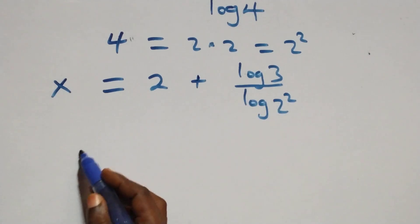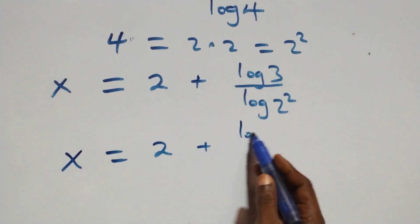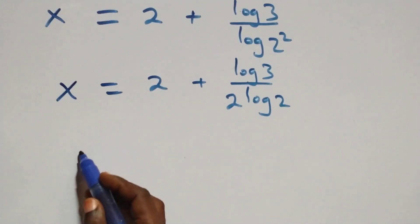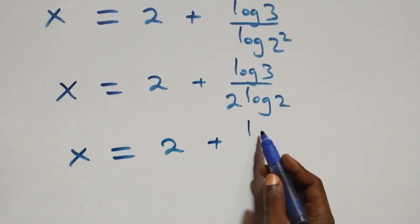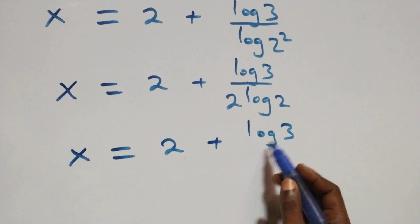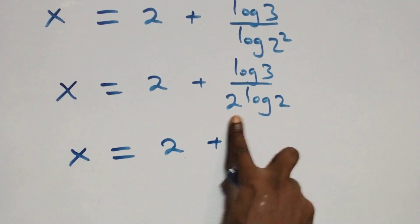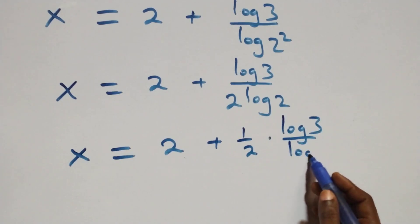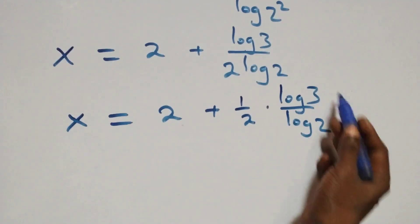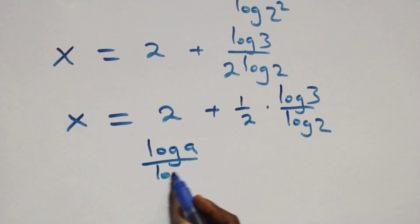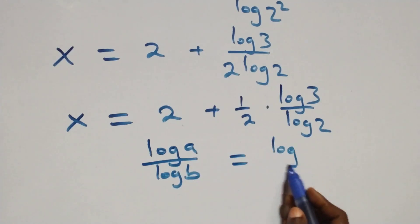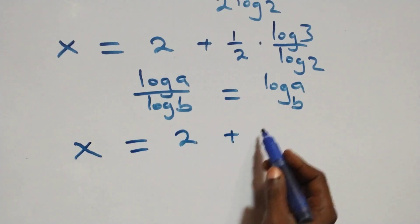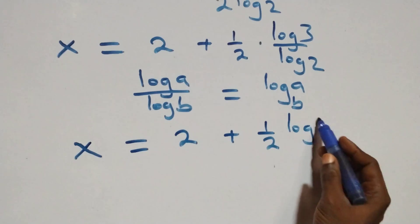We apply the power law of logarithm — 2 comes down. And here it becomes x equals to 2 plus log 3 over 2 log 2. Which we can also write as x equals to 2 plus one-half times log 3 over log 2. And from here, we apply the change of base formula: log a over log b is the same thing as log a to base b. So what we have becomes x equals to 2 plus half log 3 base 2.